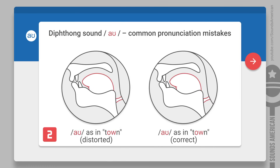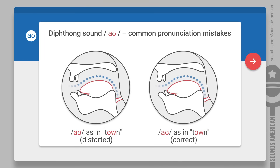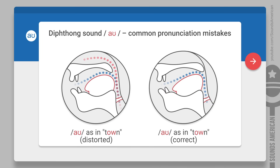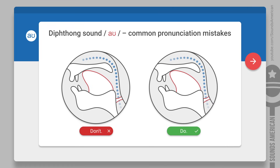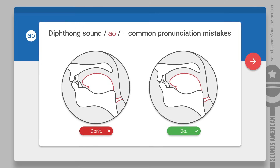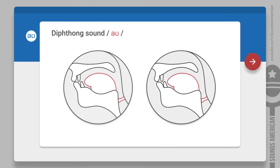Number two: in words like town, the OW is followed by a nasal consonant. Some people may distort the OW by pronouncing it through their nose. This happens if you pass the air through your nose too early, before making the sound. How do you fix this? Practice pronouncing words this way.